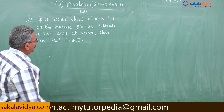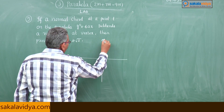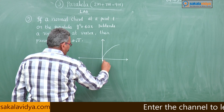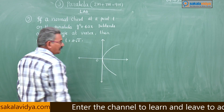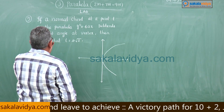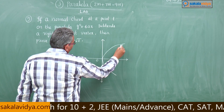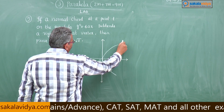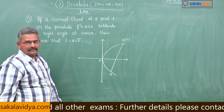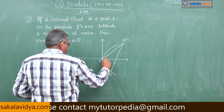How to find out this problem? First, let us draw the figure. This is the x-axis, this is the y-axis, this is y² = 4ax, and this is origin O. Now, a normal chord at point t on the parabola — let us draw the chord. Say P is one point and Q is another point. P is at t, and PQ subtends a right angle at the origin. Join OP and OQ — this is the right angle.